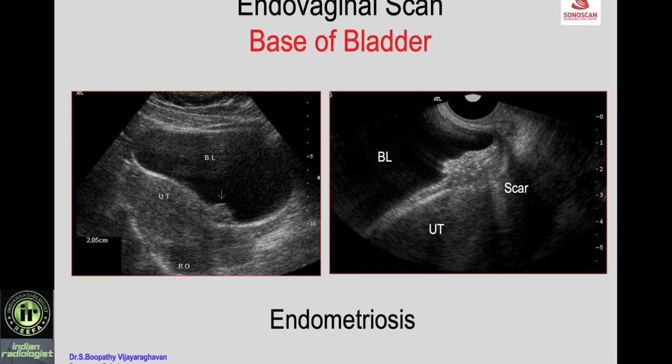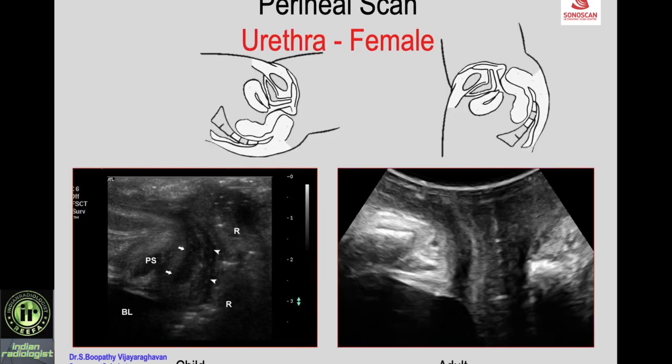Before going to the perineal scan, the wall of the urinary bladder thickness can be assessed with a partially or moderately full bladder. The volume should be around 150 cc, at which time you measure the bladder wall thickness — maximum it should be two to three millimeters.